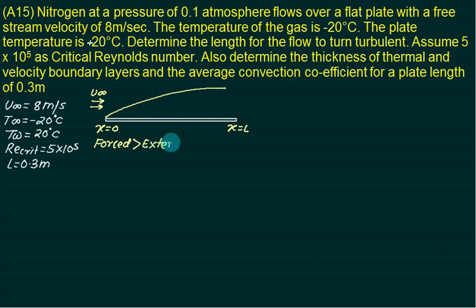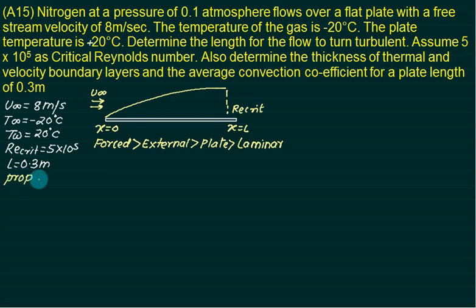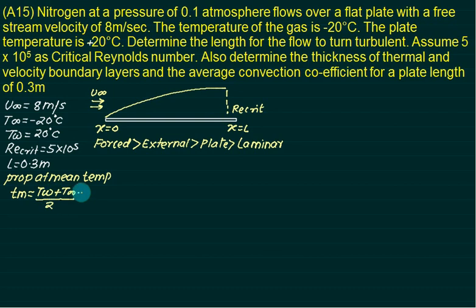Since a velocity is given, this is a forced convection problem. Flow is over a plate, so it is external flow with a flat plate geometry. The critical Reynolds number is 5 × 10⁵, meaning the entire flow is laminar up to that point. Since properties are not given, we find the mean film temperature: Tf = (Tw + T_infinity) / 2 = (20 + (−20)) / 2 = 0°C.